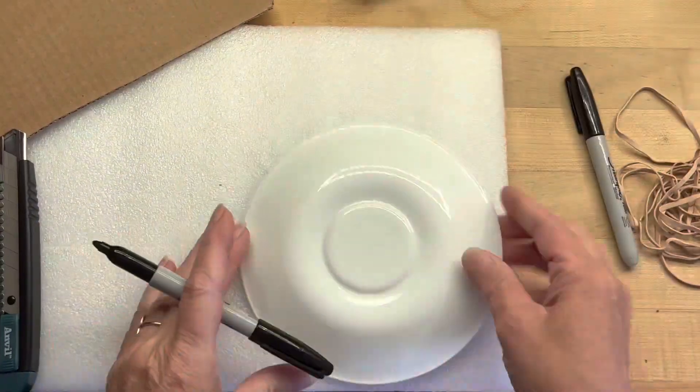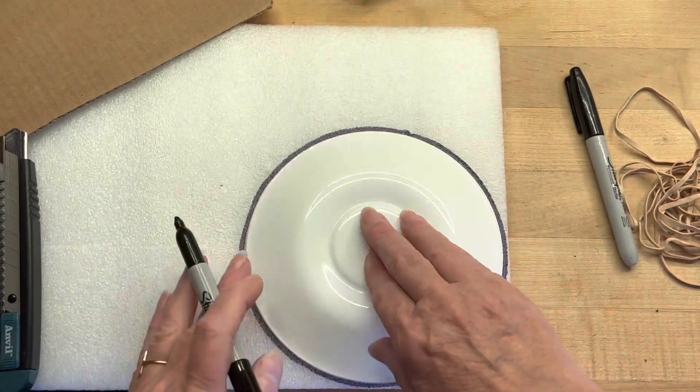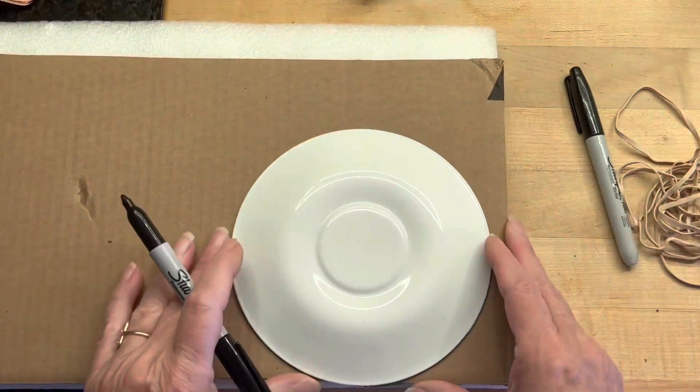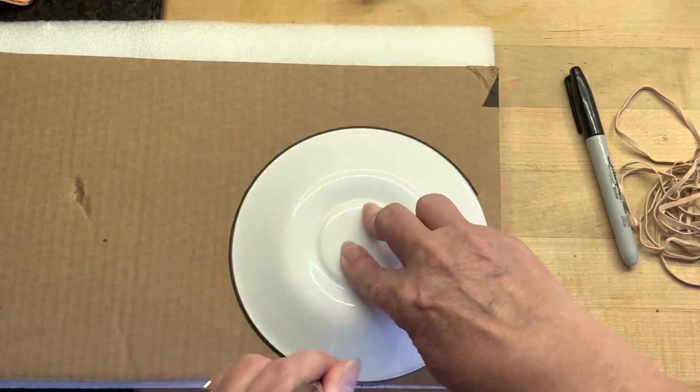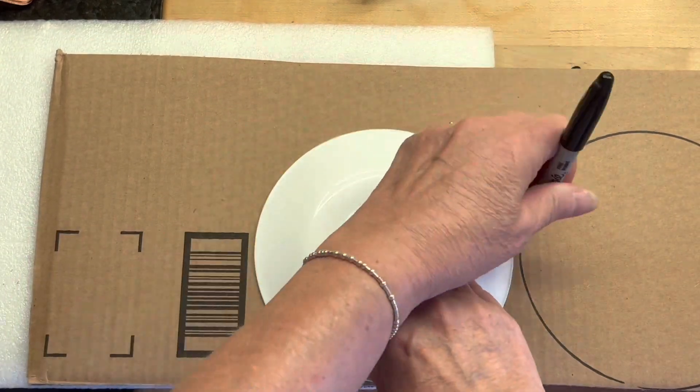Gathering my things together, I took a saucer, a black marker, a piece of soft styrofoam, piece of cardboard, a bunch of rubber bands, and now I'm making the template.